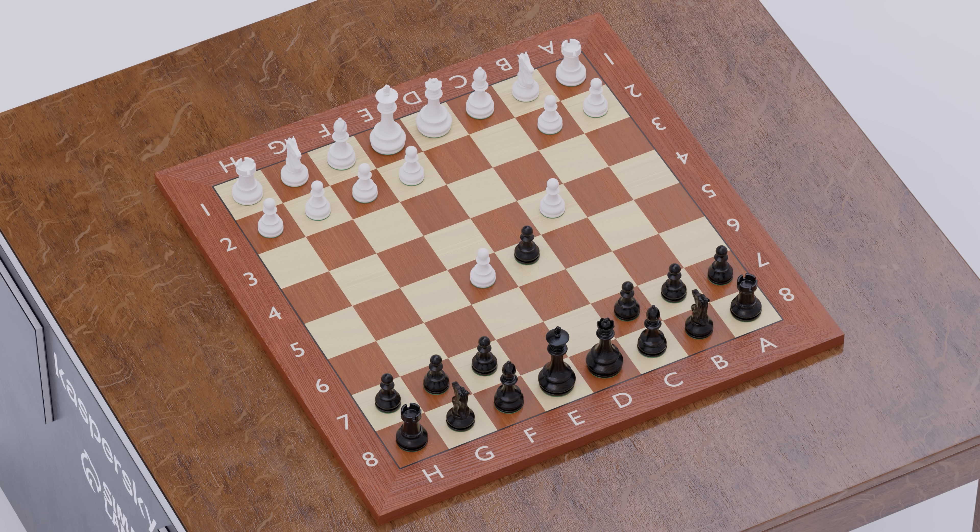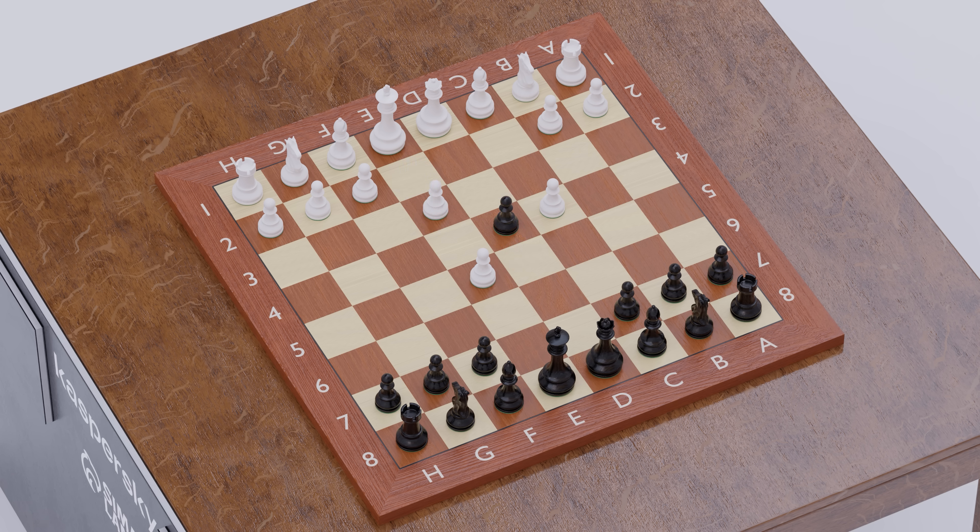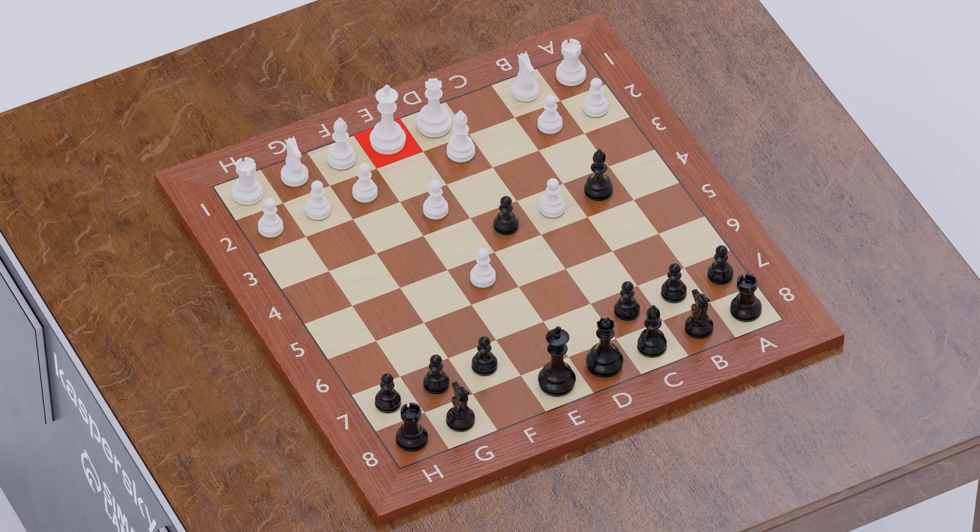After White captures, we will advance the D pawn to D4. White plays E3 in an attempt to undouble his pawns. This is a careless move, as it allows Bishop to B4 check. White blocks with the Bishop. Pawn captures on E3.